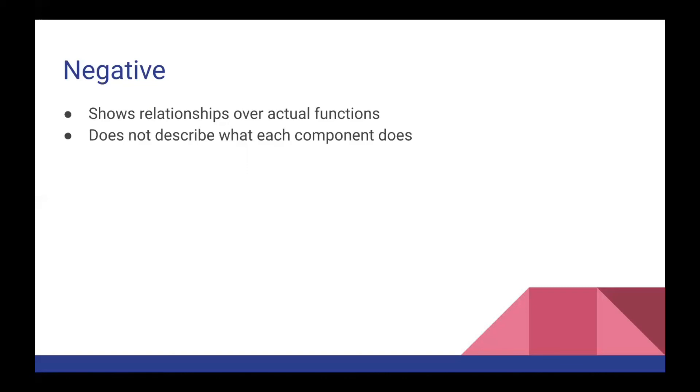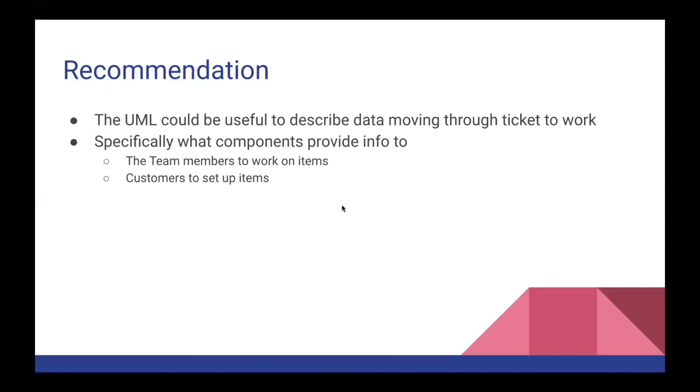But used in conjunction with other methods, it is highly useful and effective. And that is one reason why we actually do recommend this UML component diagram being used because it is very useful in describing data moving through the ticket to work system, specifically what components provide info to what other components. For example, the team members to work on items or customers to set up items. So in our specific example, the actual code may not be that complex or difficult, but having a full diagram that maps out the data, its connection points, how it communicates to each other will be very useful. And we highly recommend it as being one of the forms that we use when describing and working through the ticket to work system.